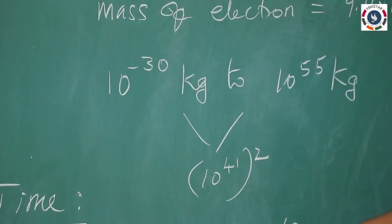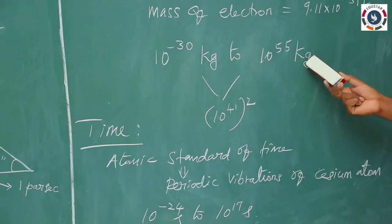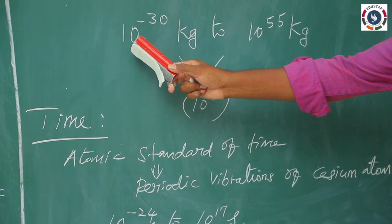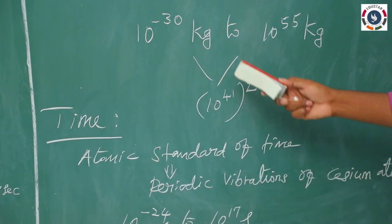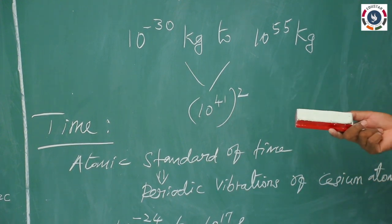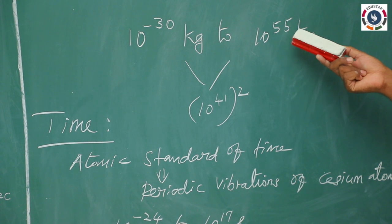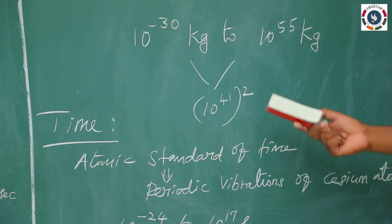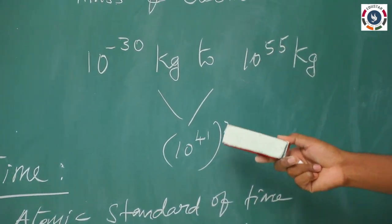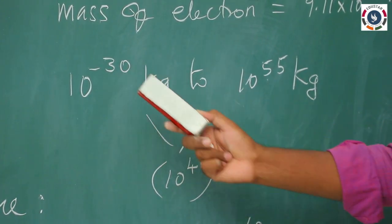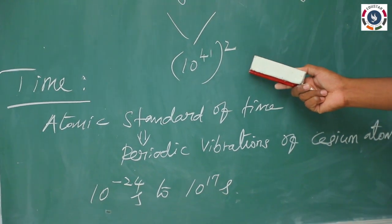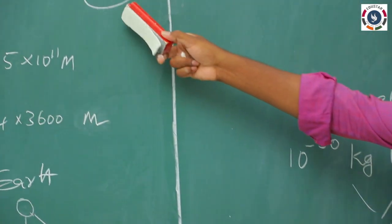That is why we use the internationally accepted standard value, the SI unit. According to mass, it varies from the range of 10⁻³⁰ kg to 10⁵⁵ kg. 10⁻³⁰ kg belongs to the mass of the electron, applicable at the atomic level, and the higher order 10⁵⁵ kg represents the estimated mass of the universe. The total range of mass from fundamental particles to the universe is 10⁻³⁰ to 10⁵⁵, a range of approximately 10⁸⁵, or we can say 10⁴¹ squared which gives 10⁸².